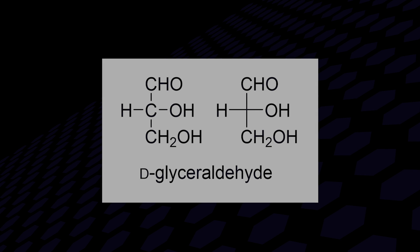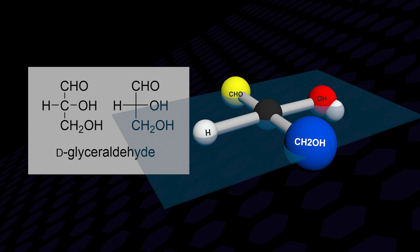This structural drawing of D-glyceraldehyde with or without the central carbon atom label is known as a Fischer projection. Although it looks flat, it implies a specific three-dimensional shape.